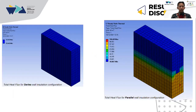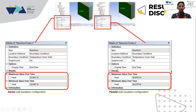The results show that total heat flux from the series configuration, shown on the left side, appears more uniform than the parallel configuration. This indicates that using series configuration, the heat transfer is more stable and can be measured in one direction. From the calculations by the software, it can be seen that the series configuration has a smaller thermal energy distribution compared to the parallel configuration shown on the right side.